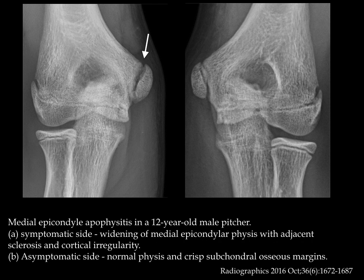In older children and athletes, we might see medial epicondyle apophysitis. Here we get widening of the medial epicondylar physis with adjacent sclerosis and cortical irregularity. Compare that to the image on the right — the asymptomatic side of the same patient — which is normal.